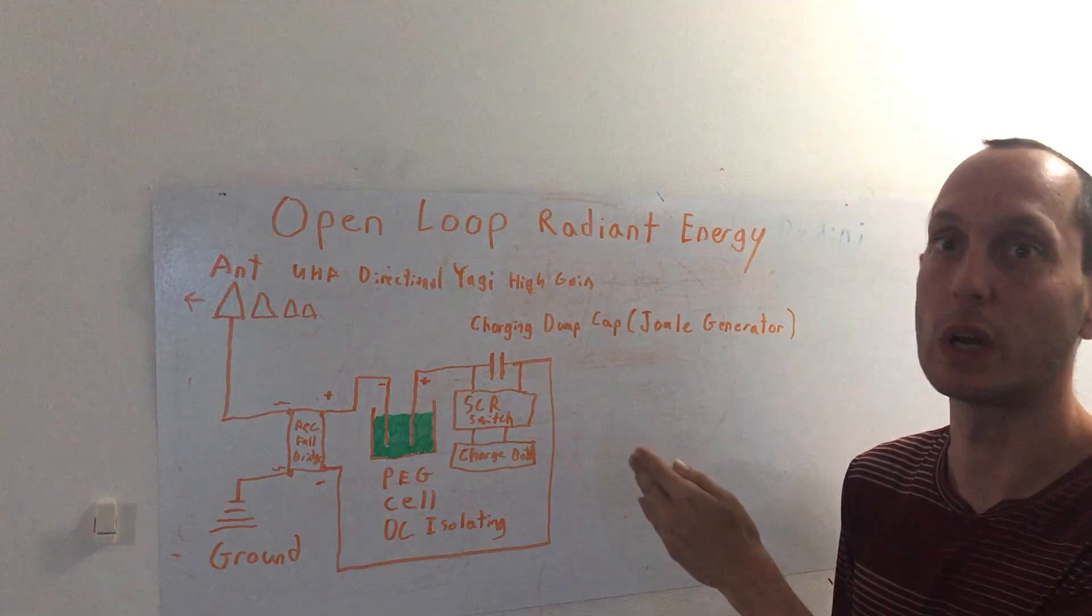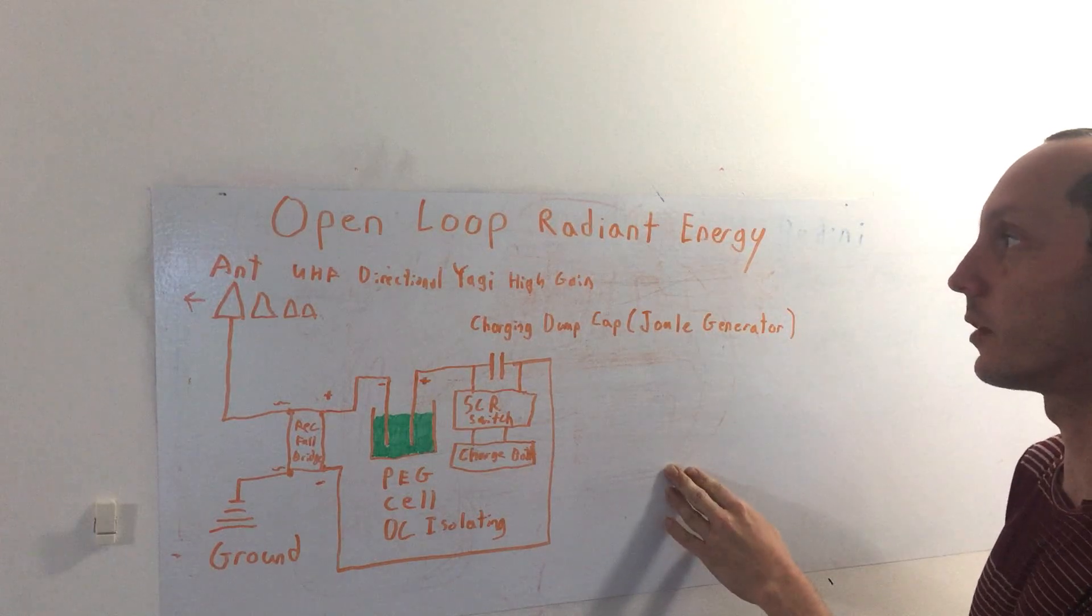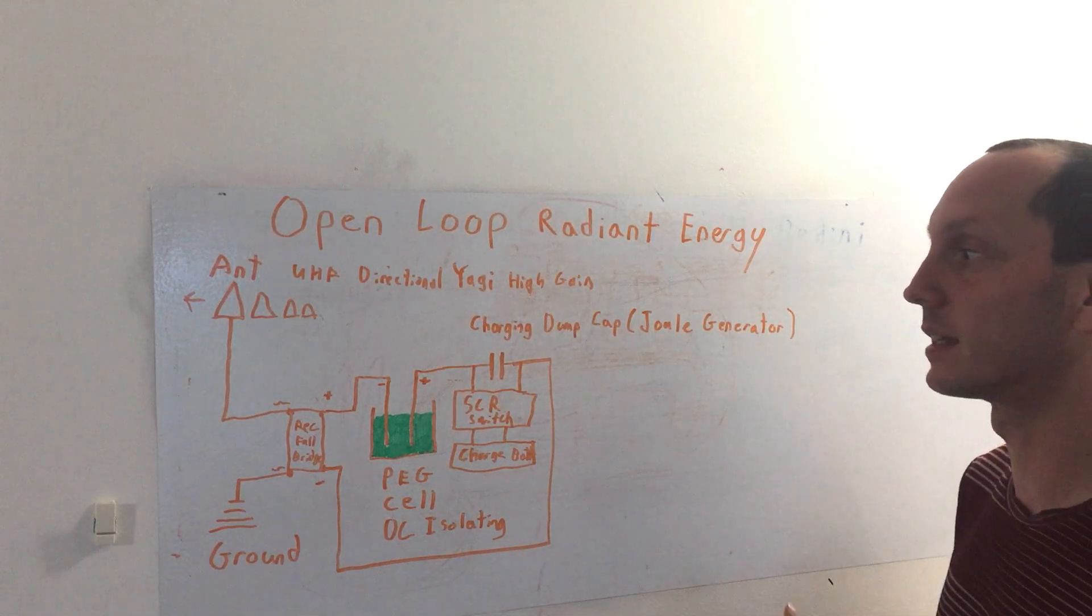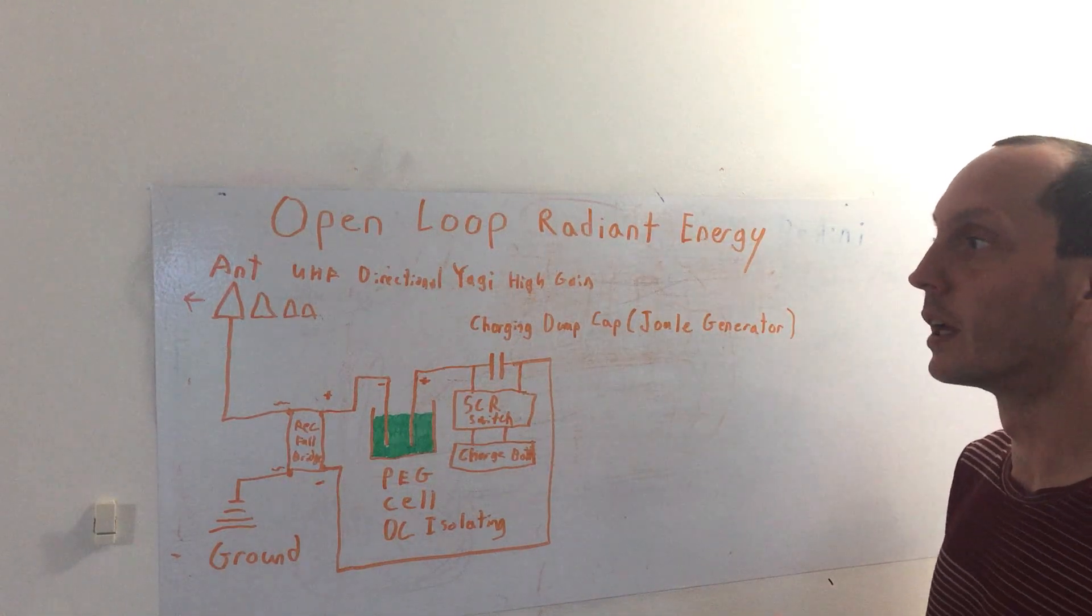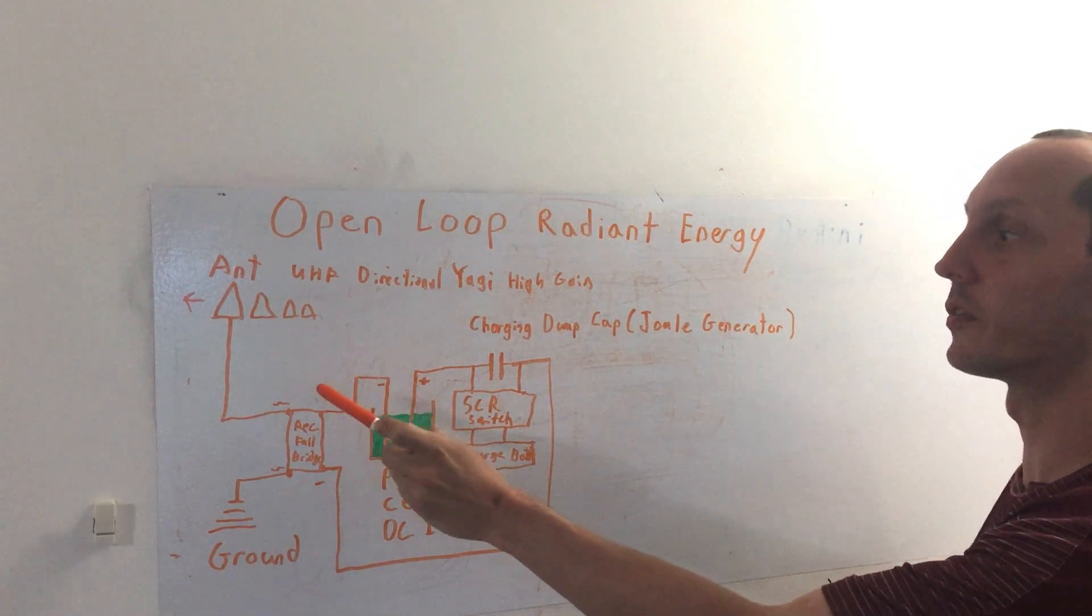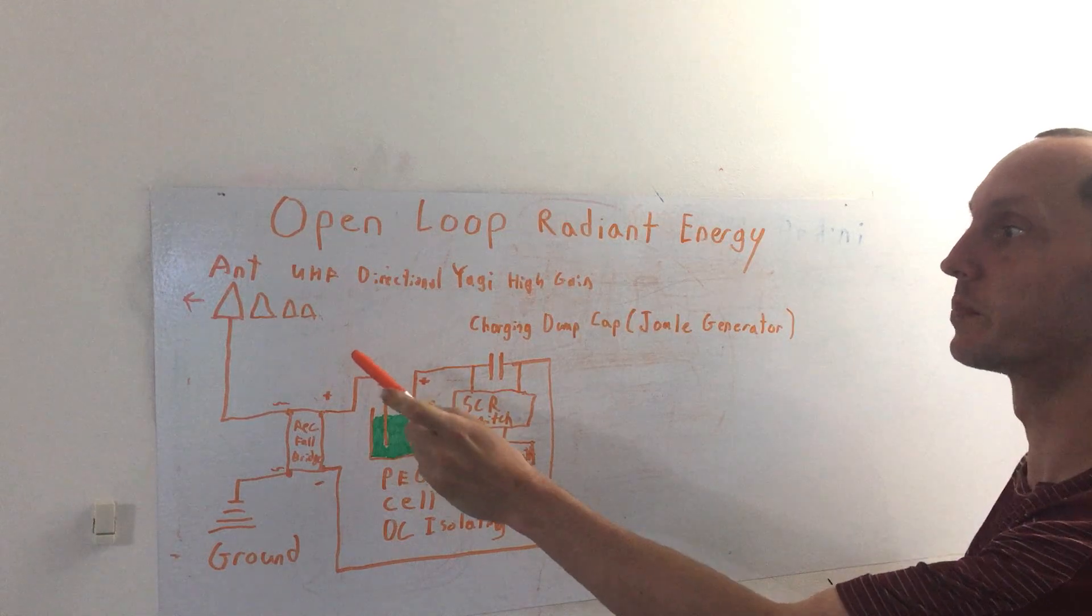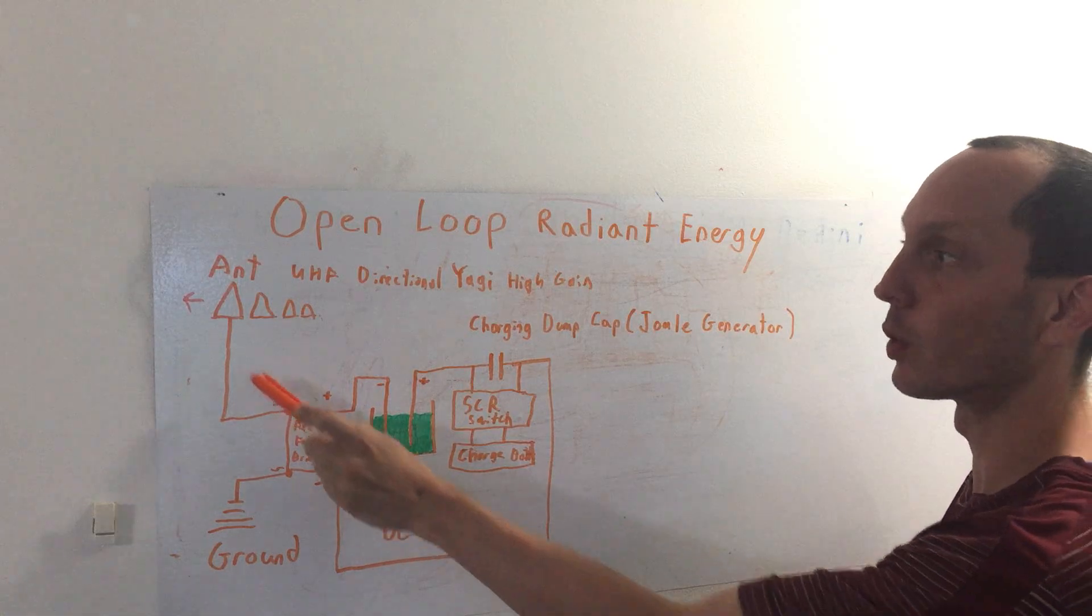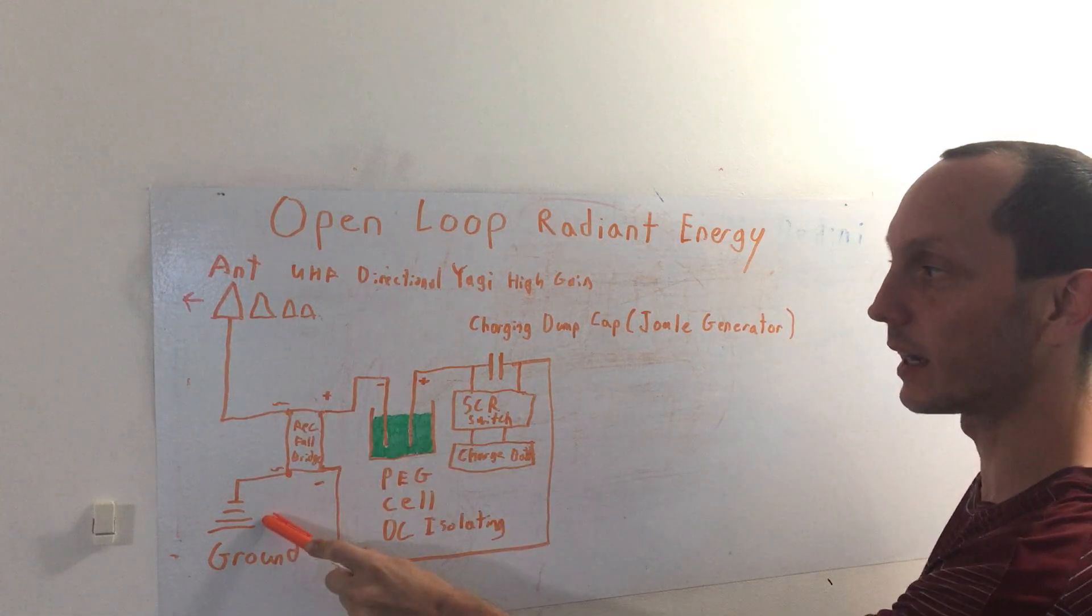So here I offer a different approach which is similar, taking advantage of the PEG cell as keeping the dipole open. So basically a kind of glorified or simplified crystal radio system here where you have a full bridge rectifier system with an antenna here and then connect it to ground.